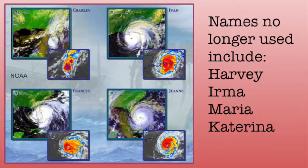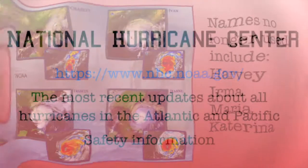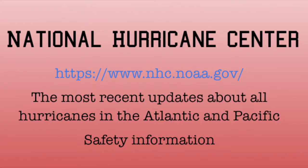Storm names are used in alphabetical order, alternating between male and female names. Separate naming systems are used for tropical cyclones in different parts of the Pacific Ocean. The National Hurricane Center has all the most recent data on all tropical storms and hurricanes in the Atlantic and Pacific Oceans. The website also has safety information.